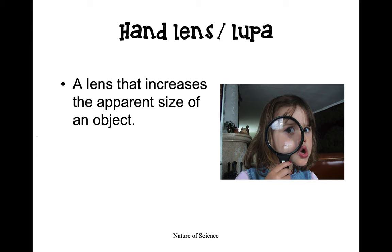An object similar to a microscope but less powerful is a hand lens — a lens that increases the apparent size of an object. You might use this when examining an insect or trying to read very small text. While it does make small objects appear larger, it's less powerful than a microscope, but it is still very useful.